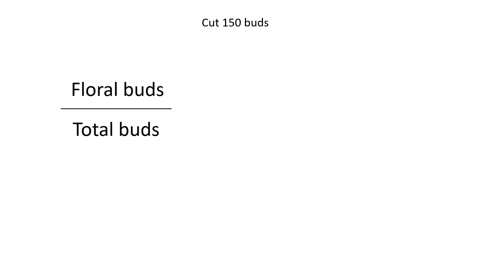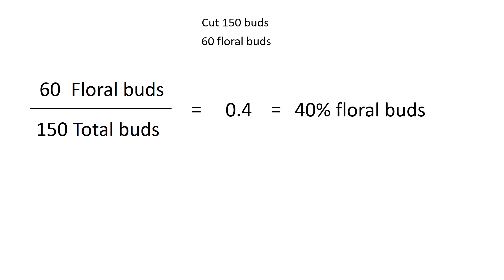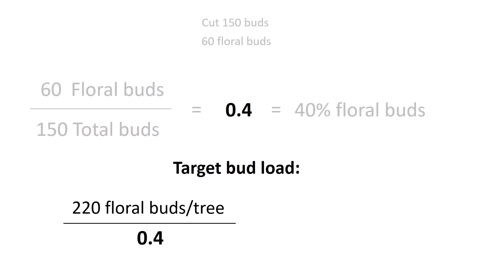Divide the number of floral buds you found by the total number of buds on the six branches. For example, if you cut open 150 total buds and found 60 floral buds, divide 60 by 150 to get 0.4, indicating that 40% of the buds in the block are floral buds. Then divide the target number of floral buds you calculated before by this number to get your target bud load.